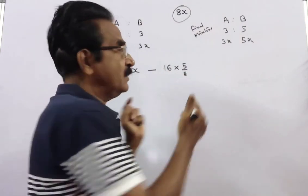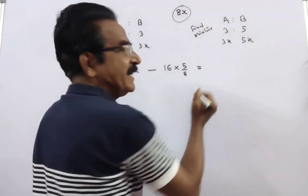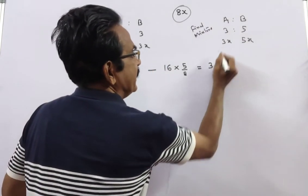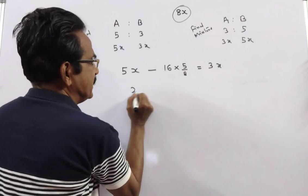This much is drawn. So, then what is the remaining quantity of liquid A in the mixture? That is 3x. 5x minus 3x.